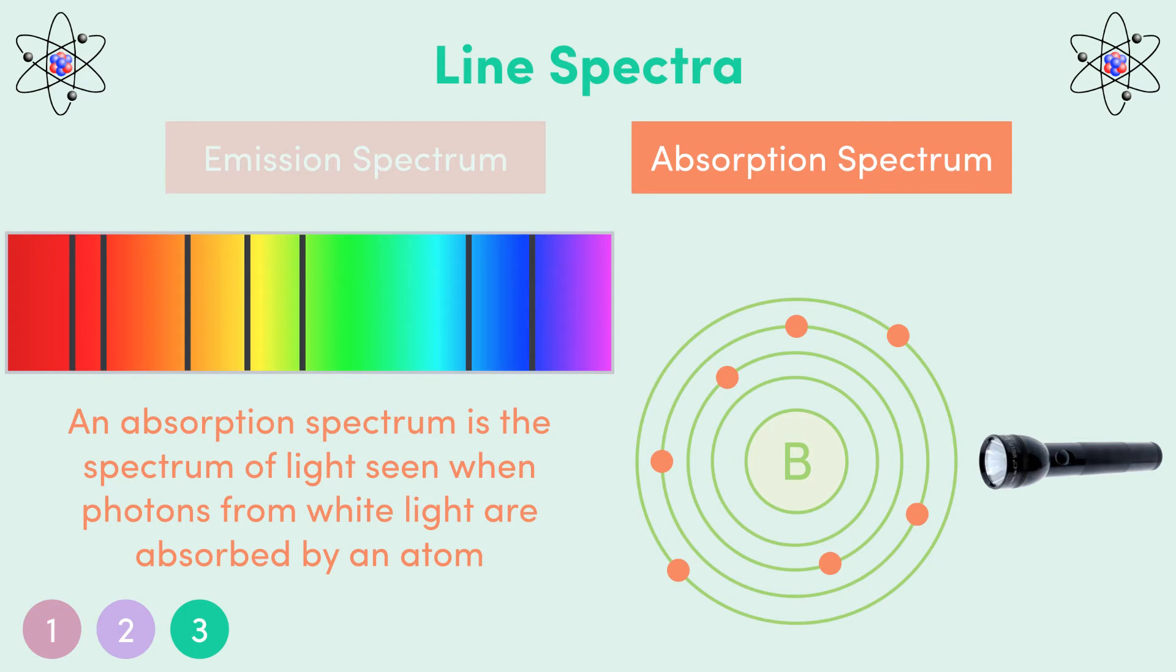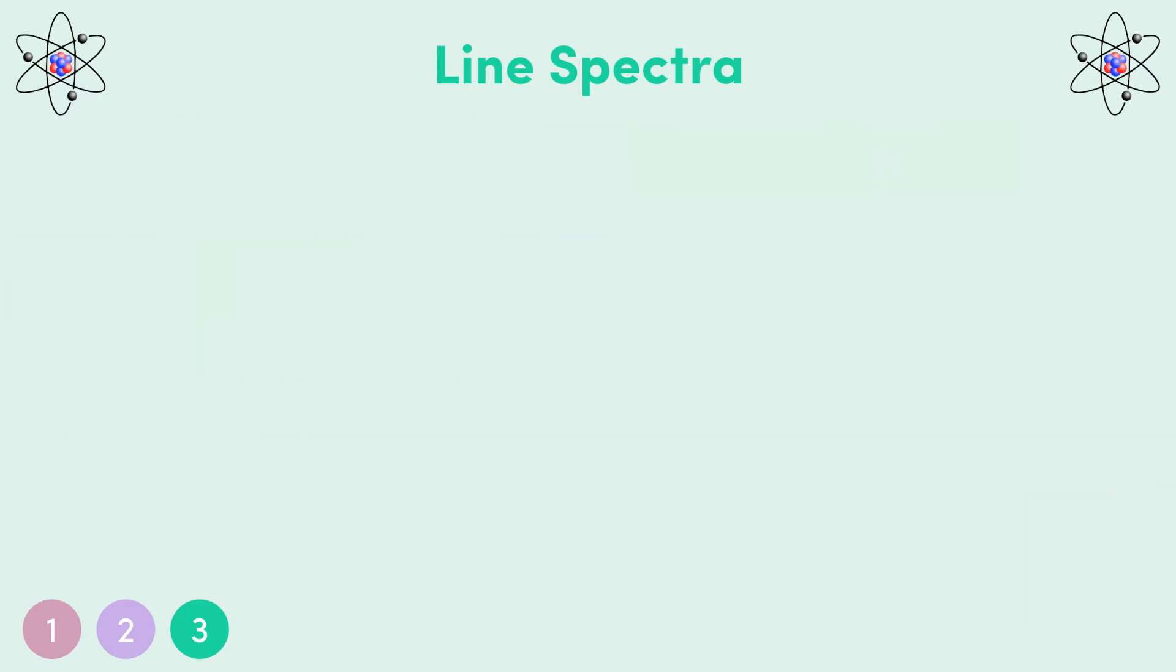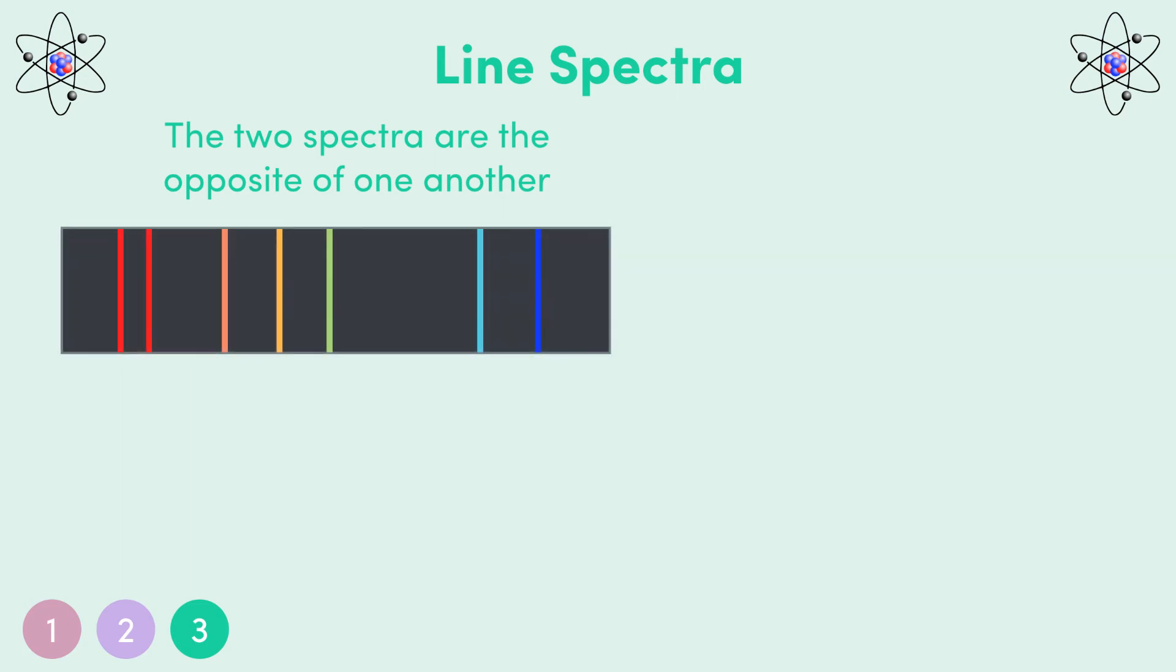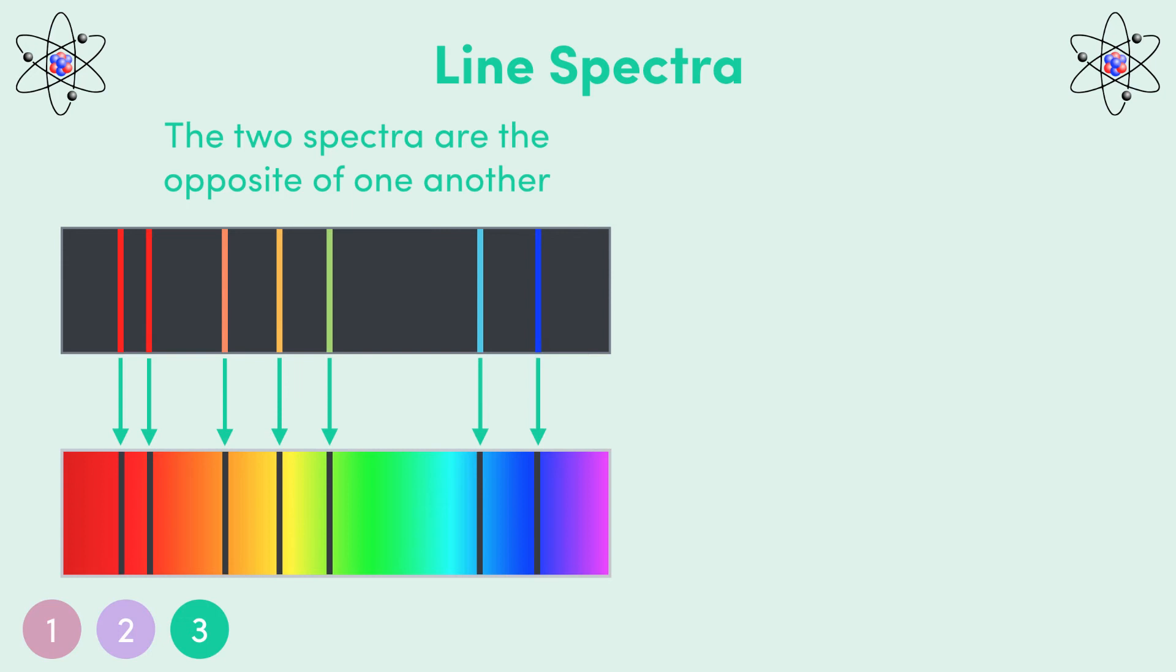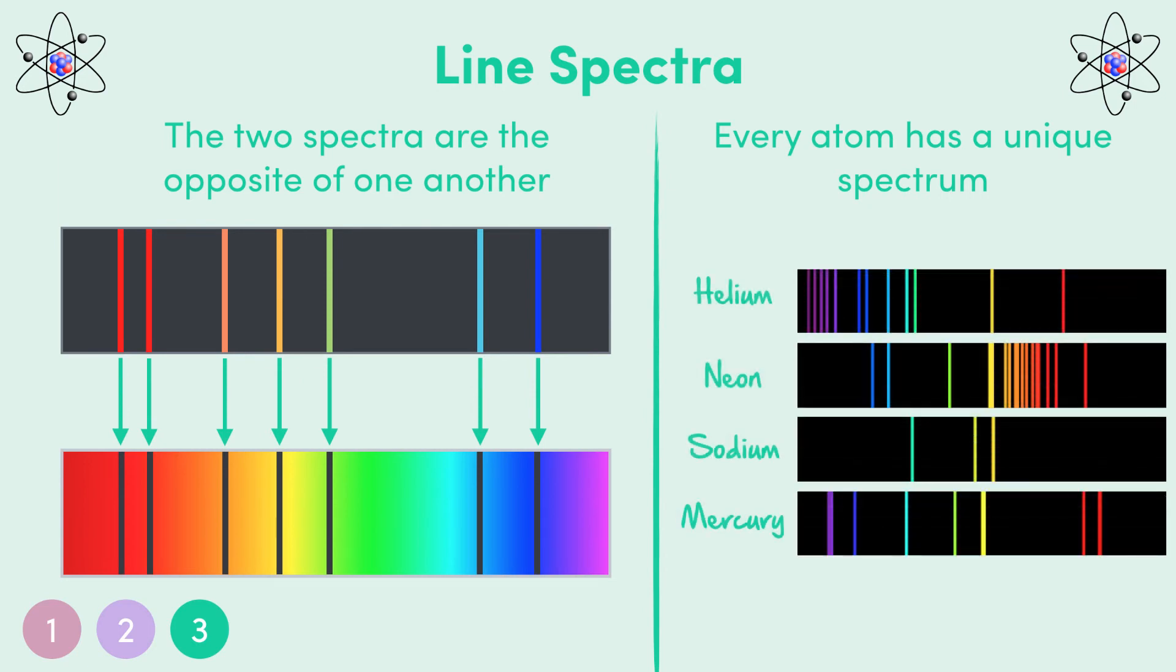A couple more things I'll say about the two spectra. First, they're essentially the opposite of each other. The lines we see in an emission spectrum for an atom correspond exactly to the lines missing from an absorption spectrum for the same atom. And this makes sense, since the emission lines come from electrons moving down energy levels, while the absorption lines missing come from the same electrons moving in the opposite direction. And second, every atom will have a unique spectrum, since the energy levels are different for each atom.